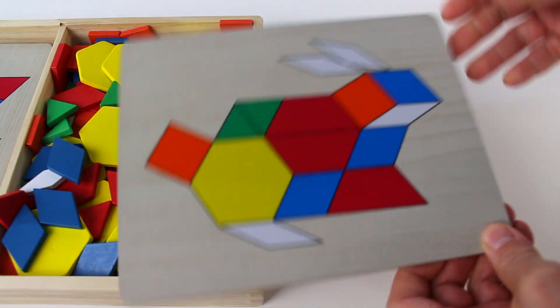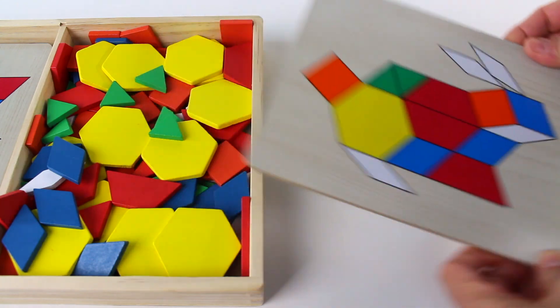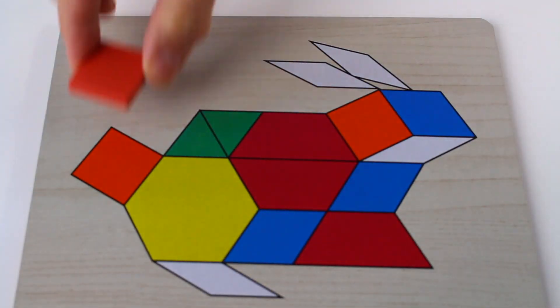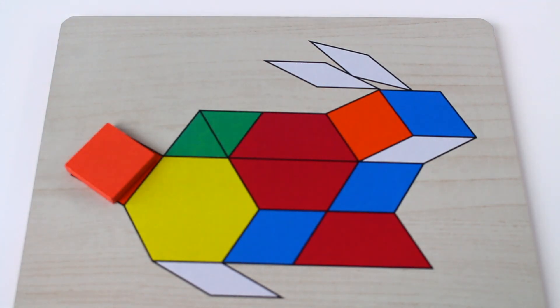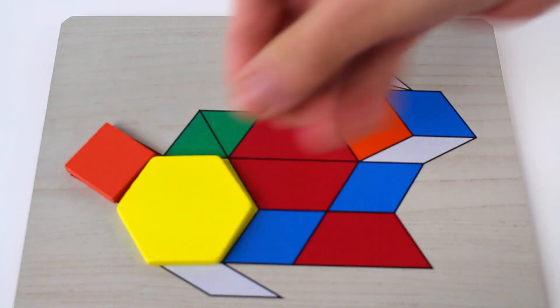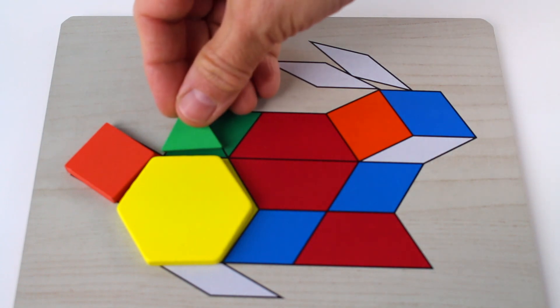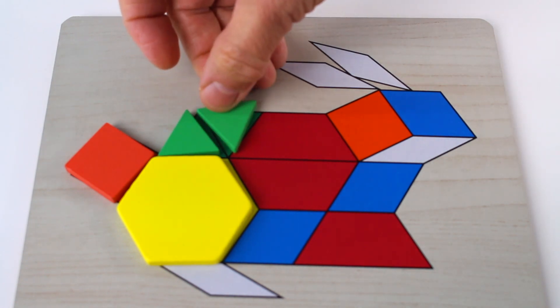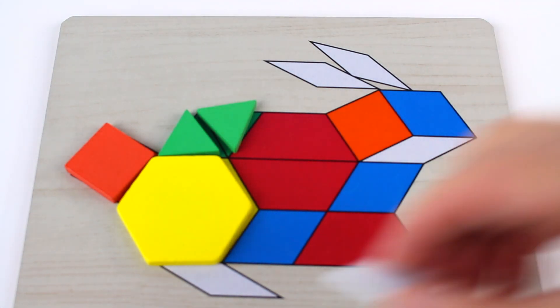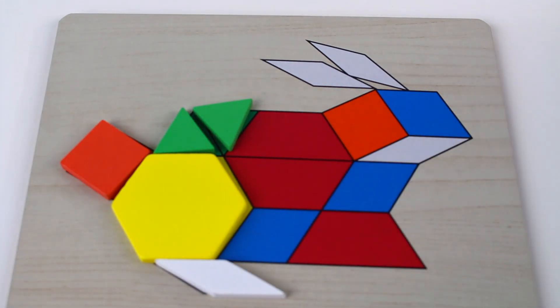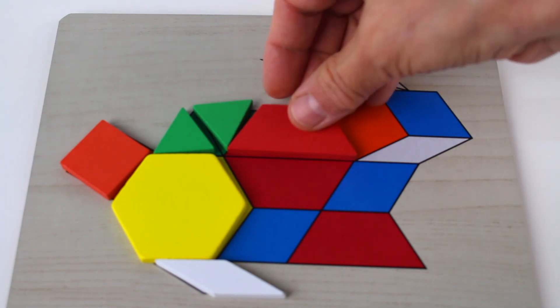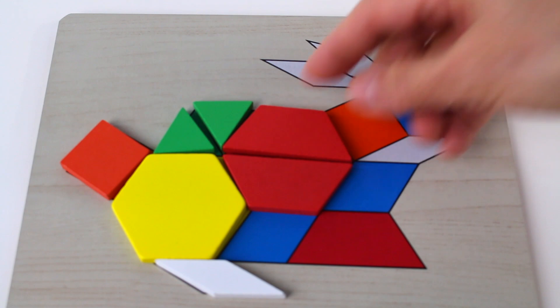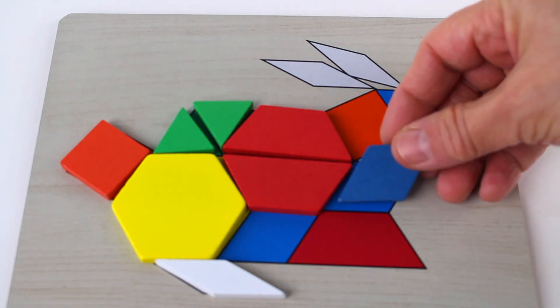What's on the flip side? Oh, it's a bunny rabbit. Let's make the bunny rabbit: white, orange square, yellow hexagon, green triangle, two green triangles, white rhombus, red trapezoid, another red trapezoid, and two blue rhombus.